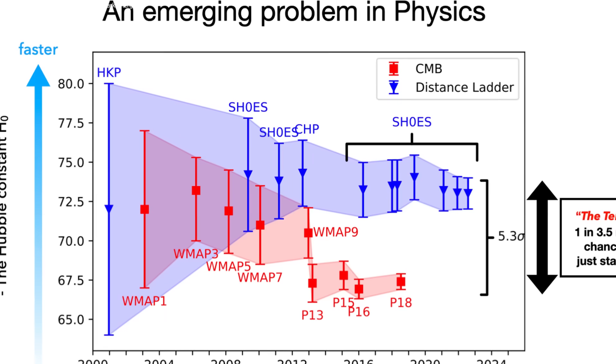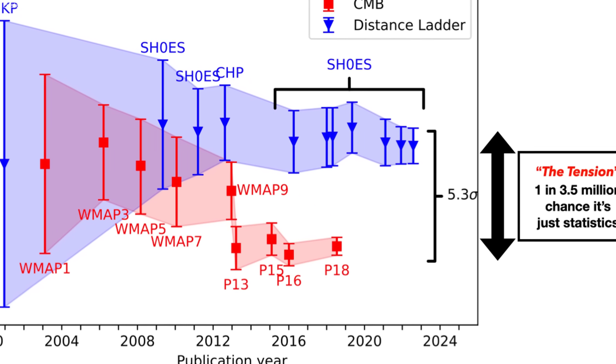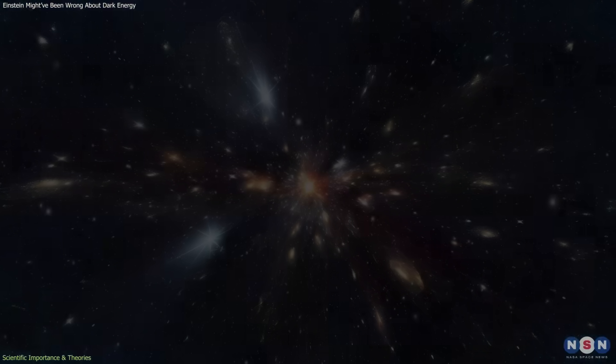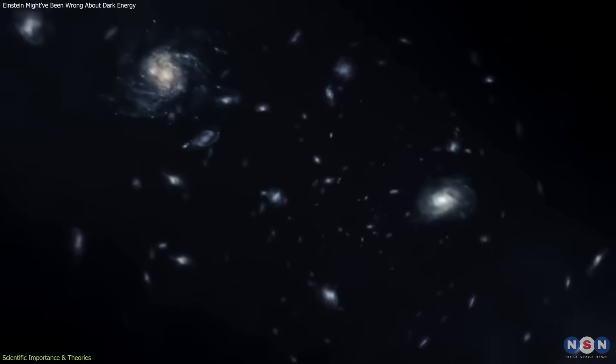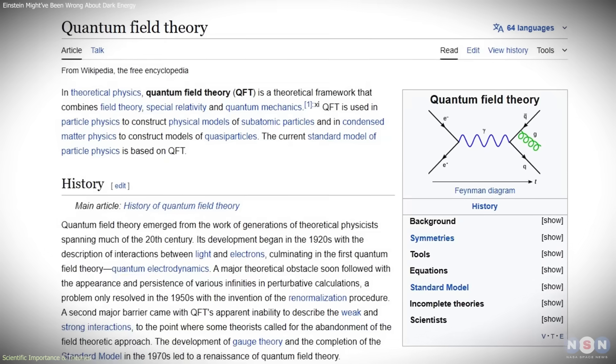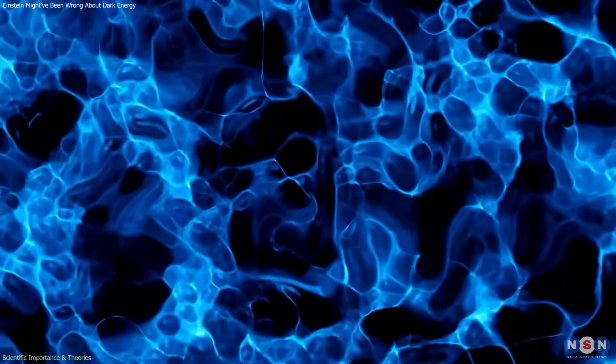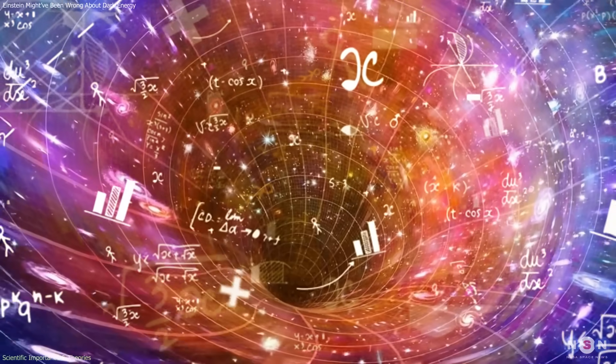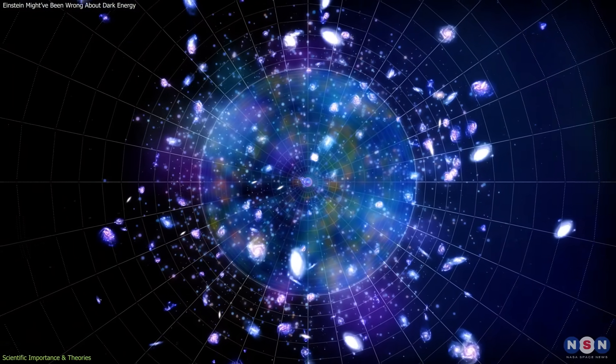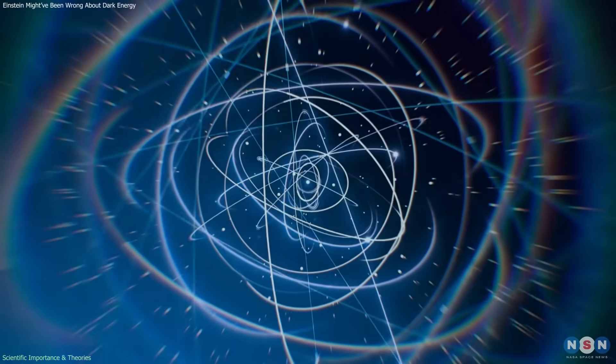This physical model explains both the current expansion data and some of the tensions that have puzzled cosmologists. Most notably, the Hubble constant tension: the persistent mismatch between measurements of the universe's expansion rate near and far. An evolving dark energy field could smooth out that discrepancy by slightly altering the expansion history, making distant and local observations more consistent. These models also fit well within the framework of quantum field theory. In them, dark energy isn't an arbitrary constant. It's an emergent property of a field that evolves according to physical laws. That idea links the largest scales in the universe to the smallest, from cosmic structure to subatomic physics.